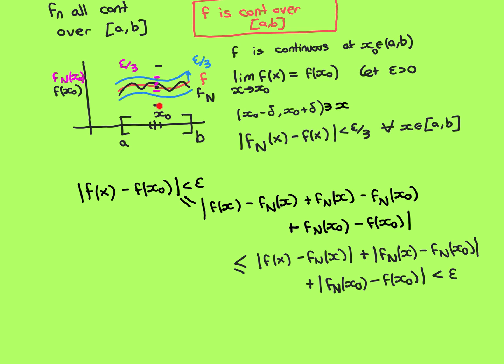Here is f of x0, and here is the epsilon interval around f of x0. The way we did this is we used the fact that f is the uniform limit to find a function f_N such that everywhere on the whole interval (a, b) it is within epsilon over 3 of the limit function f. I also know that all functions in the sequence are continuous, so f_N is also continuous everywhere, and in particular at x0. I can use the continuity of f_N at x0 to find a delta interval around x0 mapped entirely into the epsilon over 3 interval around f_N at x0.